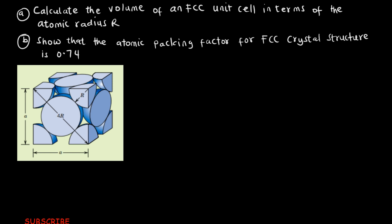The radius of each sphere is given to be R. So from this point to this point is R, and the same here is R. Looking at the half atom at the center, since the radius is R, the diameter will be 2R. So the entire length of this diagonal line is R + R + 2R, which gives us 4R. That's why we have 4R for the diagonal.